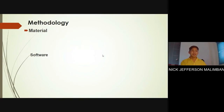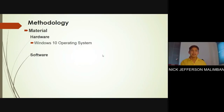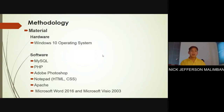In methodology, it shows the materials and methods used in research to develop the class record management system for the College of Engineering and Information Technology. The hardware used includes a Windows 10 operating system, 64-bit operating system, and a laptop. The software includes MySQL for the database, PHP, Adobe Photoshop for editing images and graphics like buttons, Notepad, HTML and CSS for web formatting, Apache for web server, and Microsoft Word for documentation.